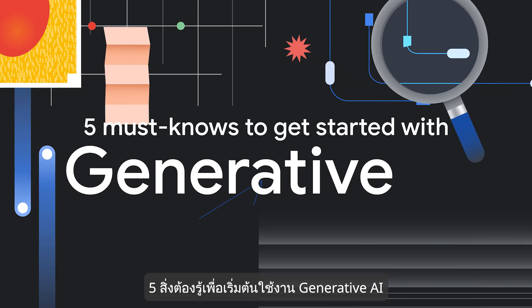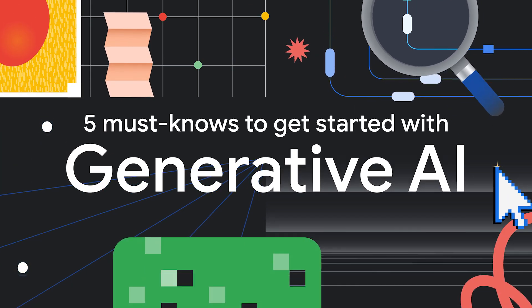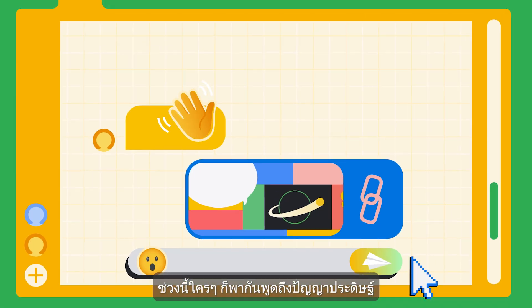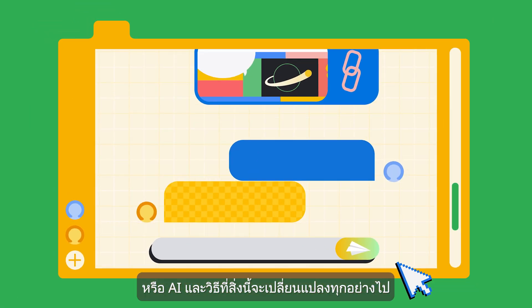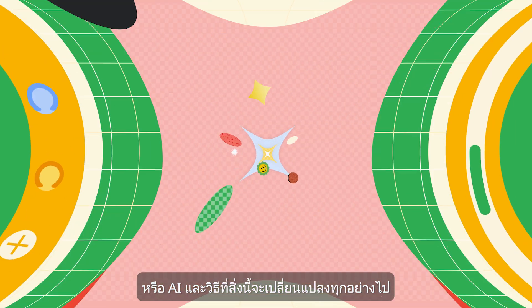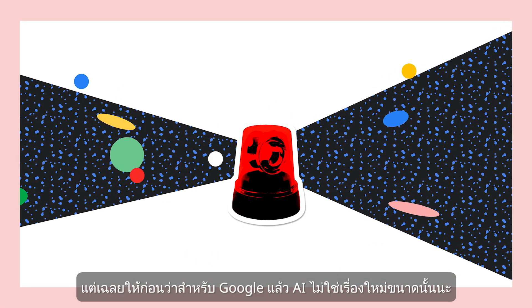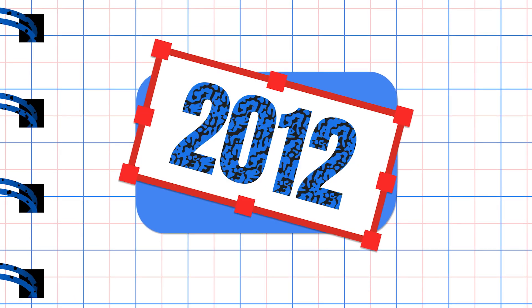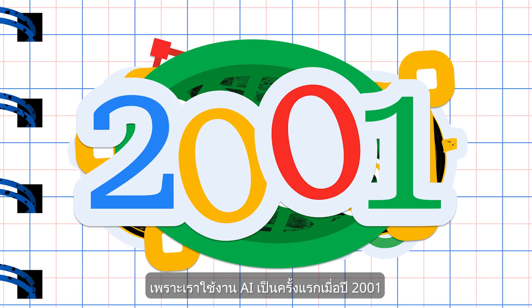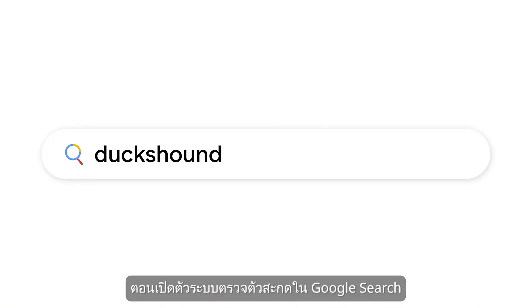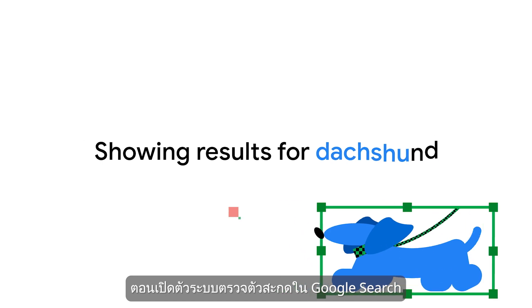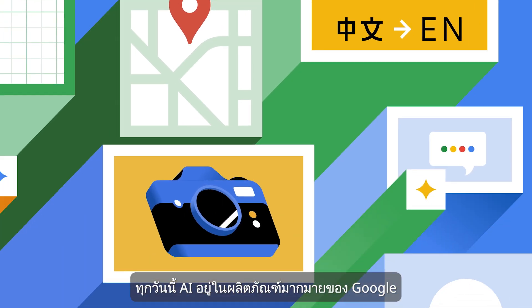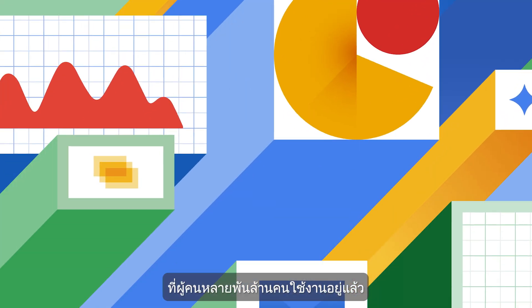Five must-knows to get started with Generative AI. Lately, everyone's talking about artificial intelligence, or AI, and how it could change things. But spoiler alert, at Google, AI's not that new at all. We first used it in 2001 when we launched our spellcheck system on Google Search. Today, AI is in many Google products that billions of people already use.